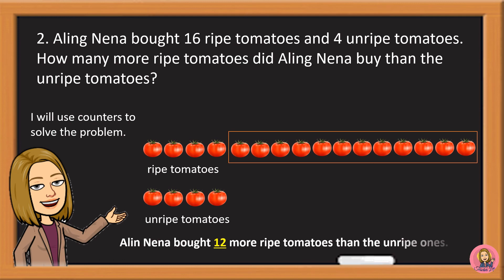Aling Nena bought 12 more ripe tomatoes than the unripe ones.